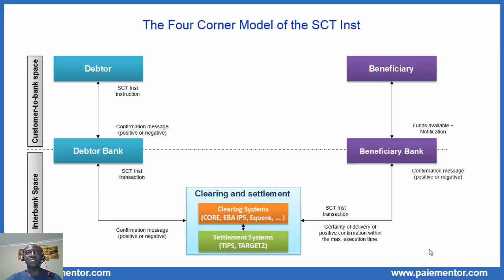In its most common form, the SEPA instant transfer involves four main players: the originator and his bank (the originator bank), the beneficiary and his bank (the beneficiary bank), and the clearing and settlement systems that interconnect the two banks, as we can see on the picture. The main steps for processing a SEPA instant have been numbered in the figure. There are eight steps in total and we will present them one after another.